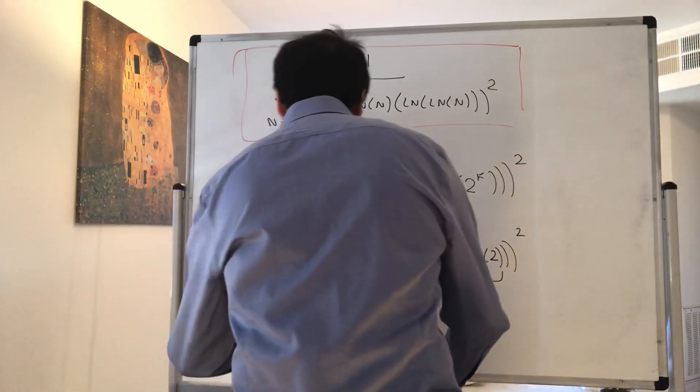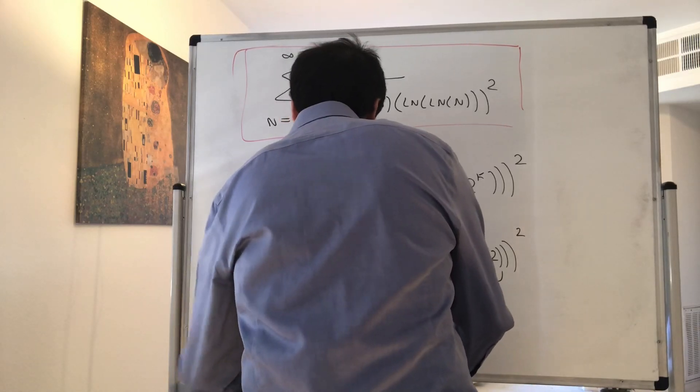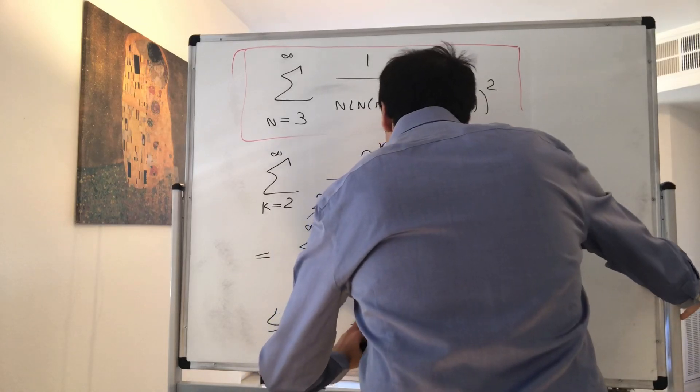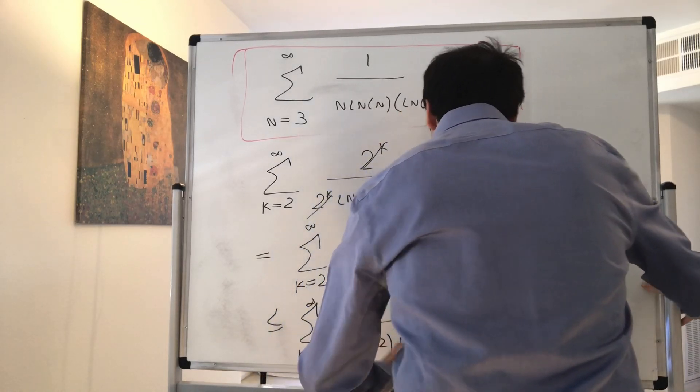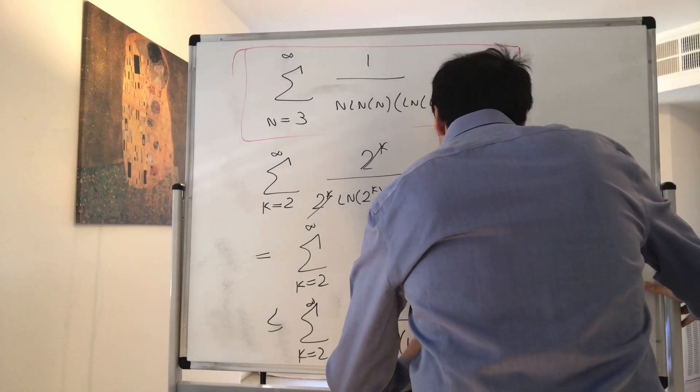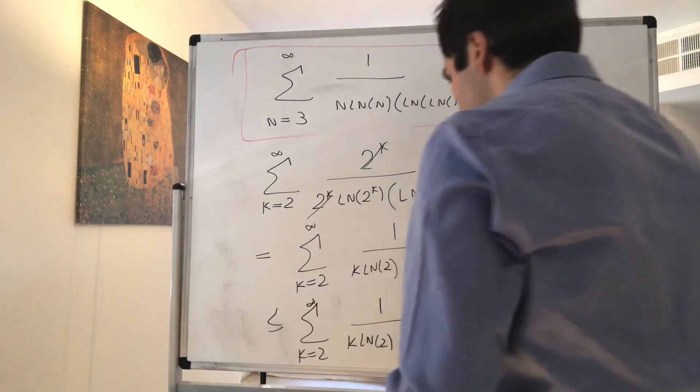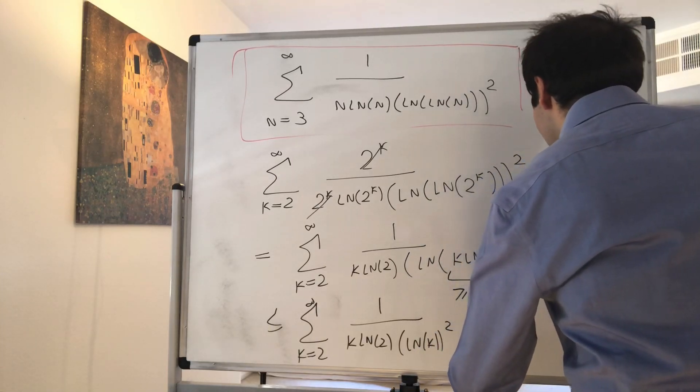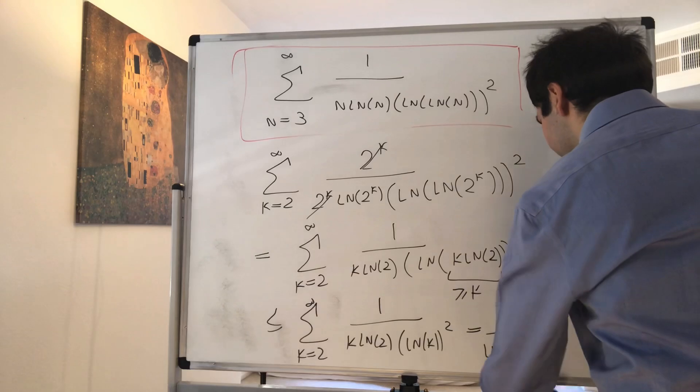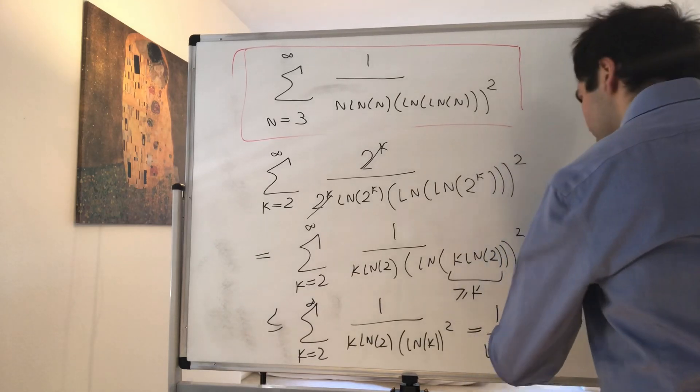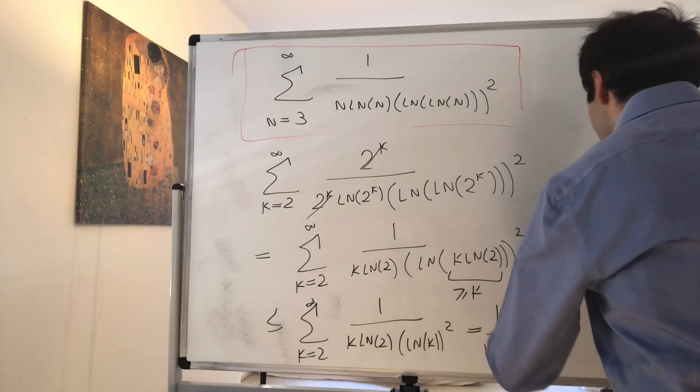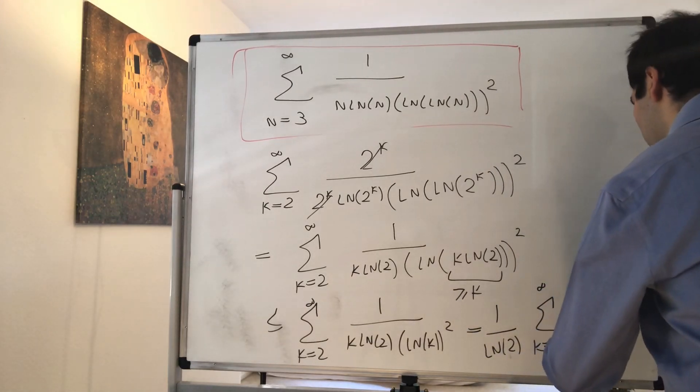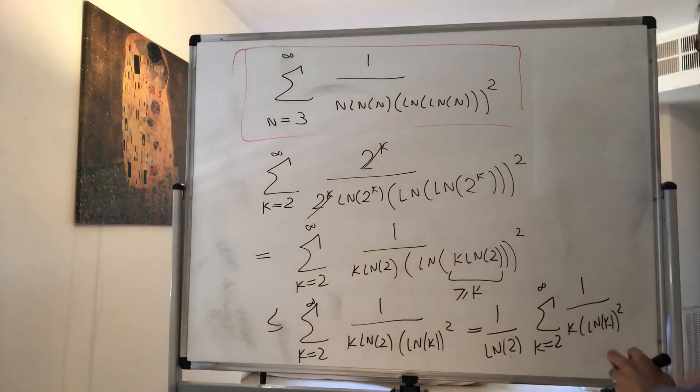We have, this is less than or equal to the sum from k equals 2 to infinity of 1 over k ln of k squared.